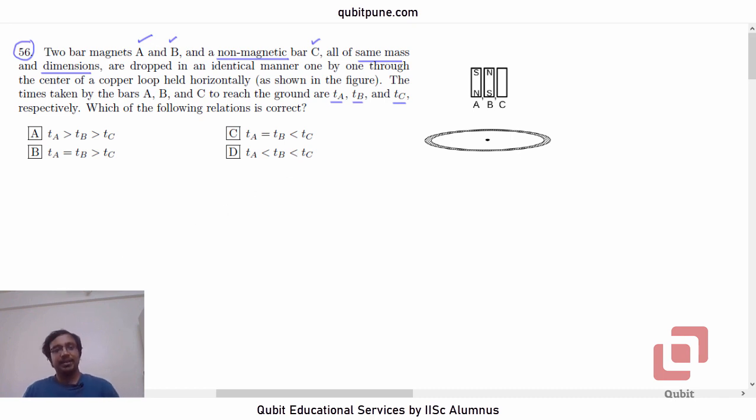The options themselves indicate that the time taken by the non-magnetic bar C is never going to be equal to the time taken by the magnet A and magnet B.